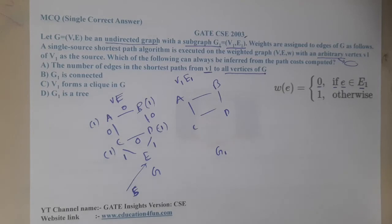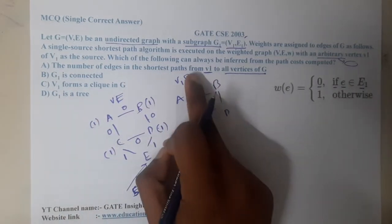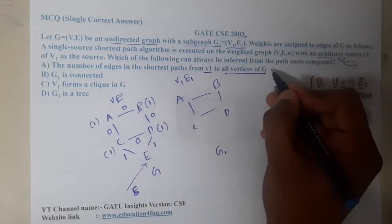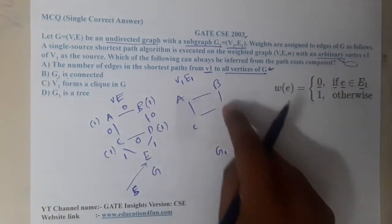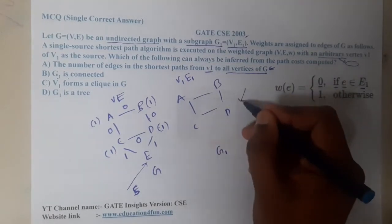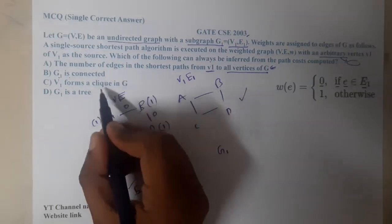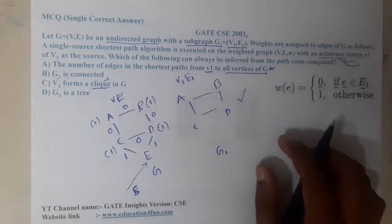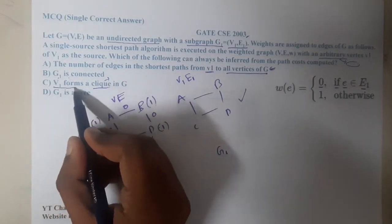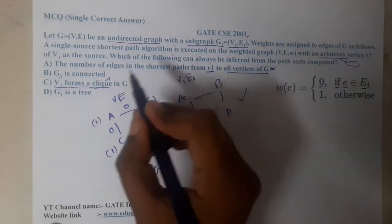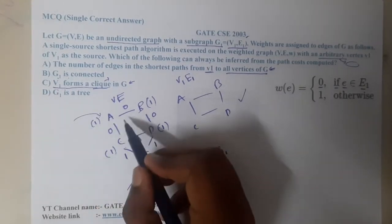Now based on the path costs, let us analyze the options. Option A says the number of edges in the shortest path from v1 to all vertices will be known. Option C says v1 forms a clique in G. Is it 100% sure that v1 forms a clique? In our example e formed a clique, but what if I took a as the source vertex? Then a is not a clique, hence option C is absolutely wrong.